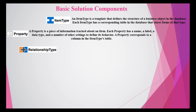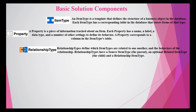A Relationship Type is a link between two item types. There is a source item type (the parent) and a related item type (the child). The relationship type defines how two item types are related to one another and governs the behavior of that relationship.